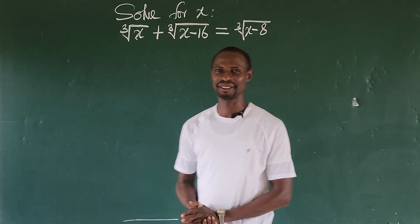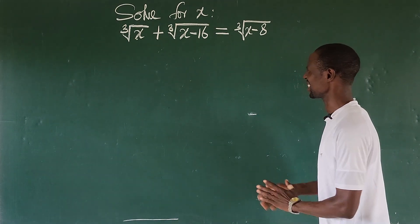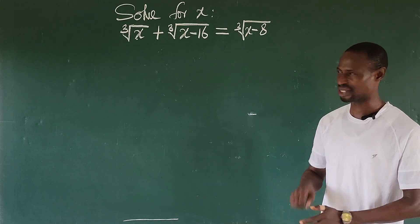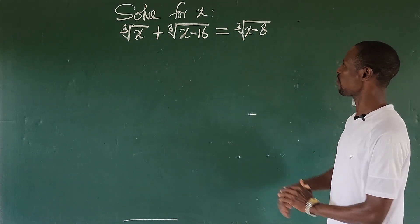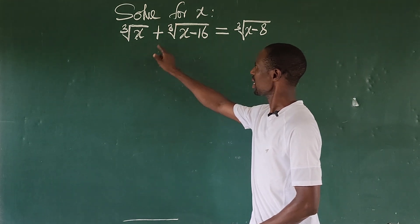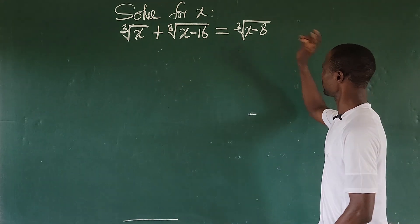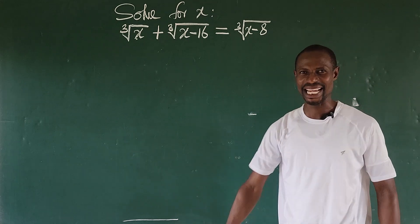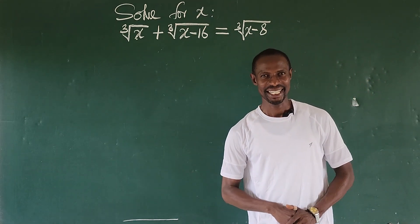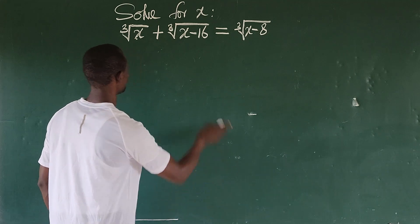Hello everyone, welcome to today's class. Look at this question before us — it's a very nice radical equation. We have the cube root of x plus the cube root of x minus 16, equal to the cube root of x minus 8. What is the value of x? Let's get into today's solving without much waste of time.